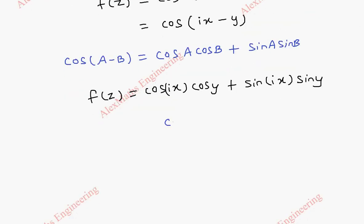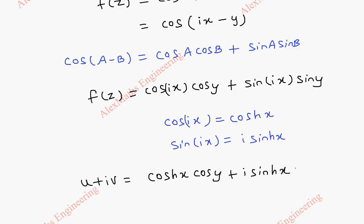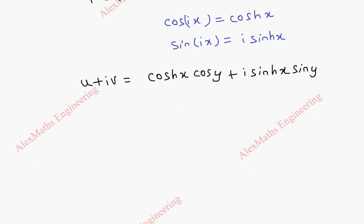Once again, we are going to use a formula. Cos ix is going to become cosh x. So, our f of z is u plus iv. That will become cosh x into cos y plus i sinh x into sin y. Now, equating the real part on both the sides, u is cosh x into cos y and v is sinh x into sin y.